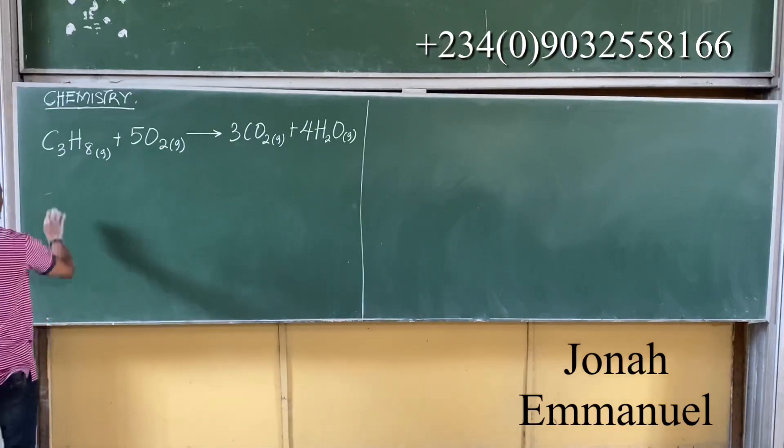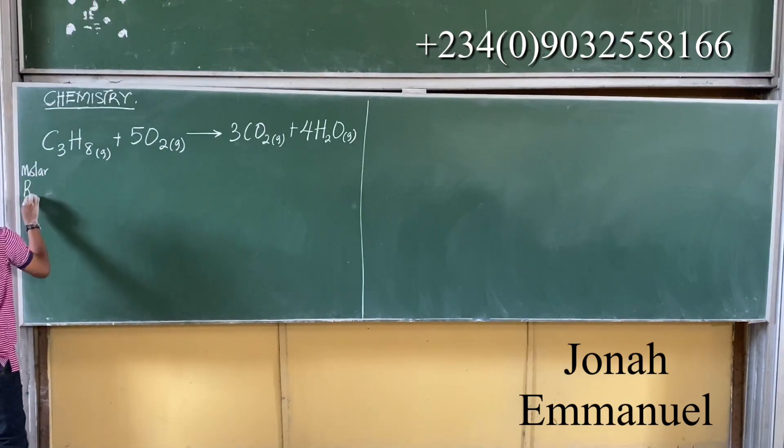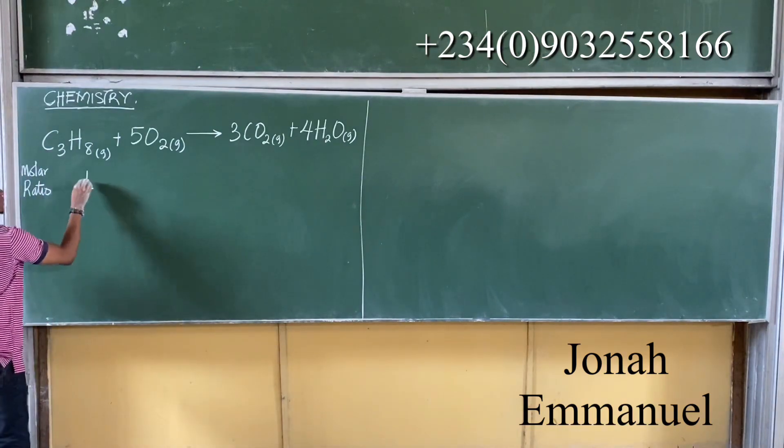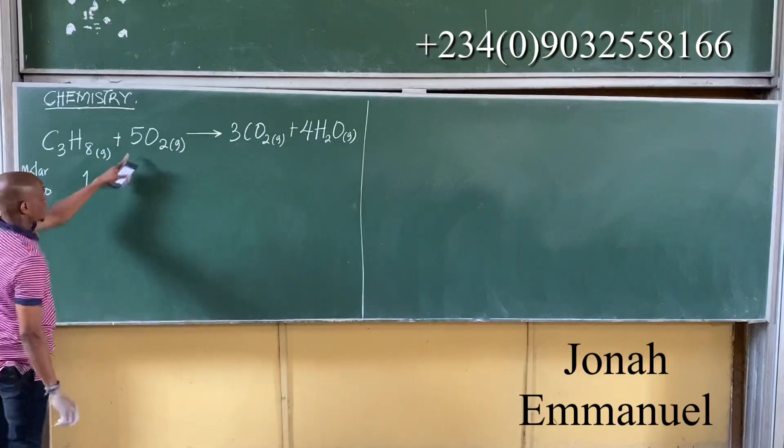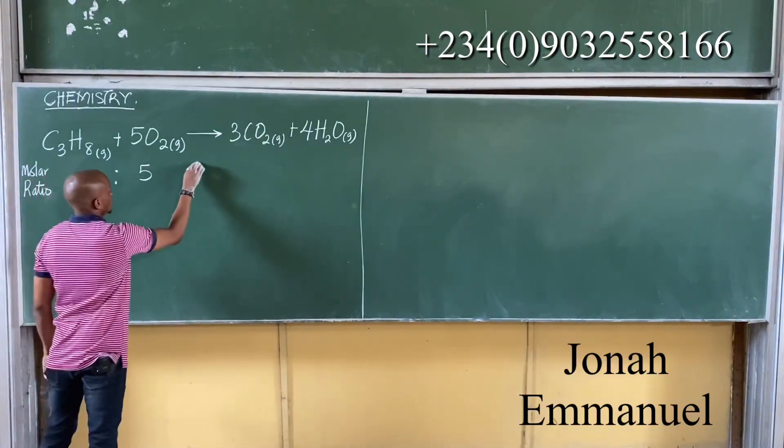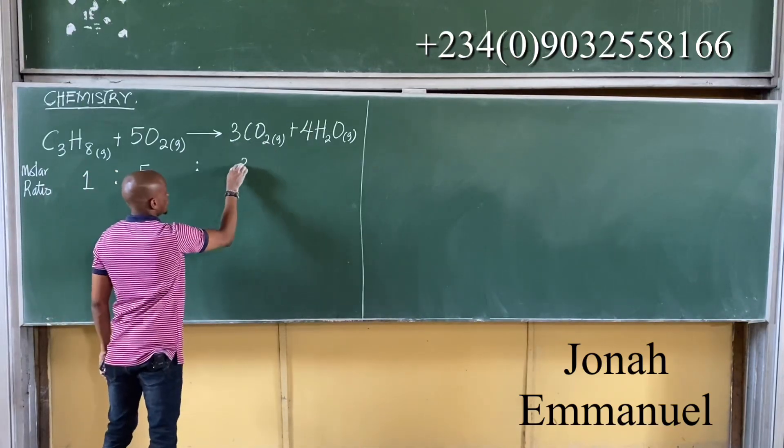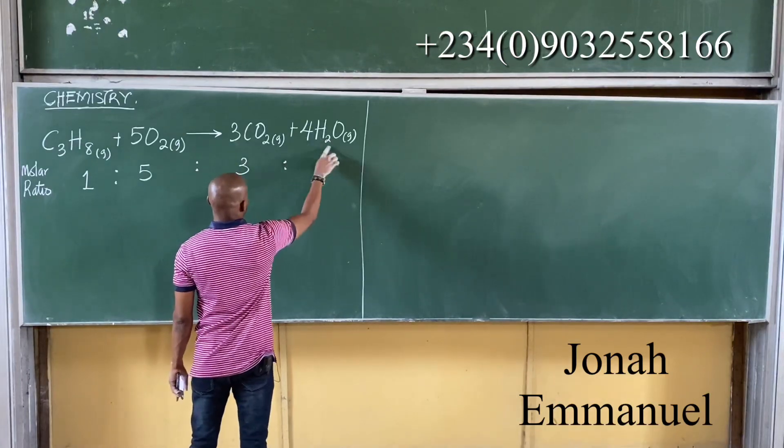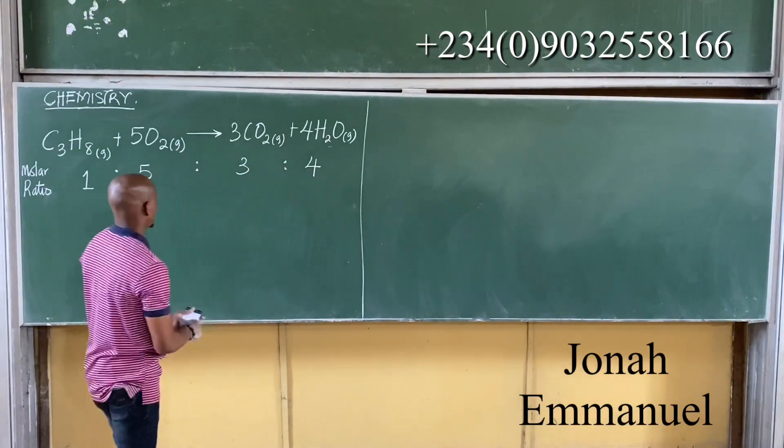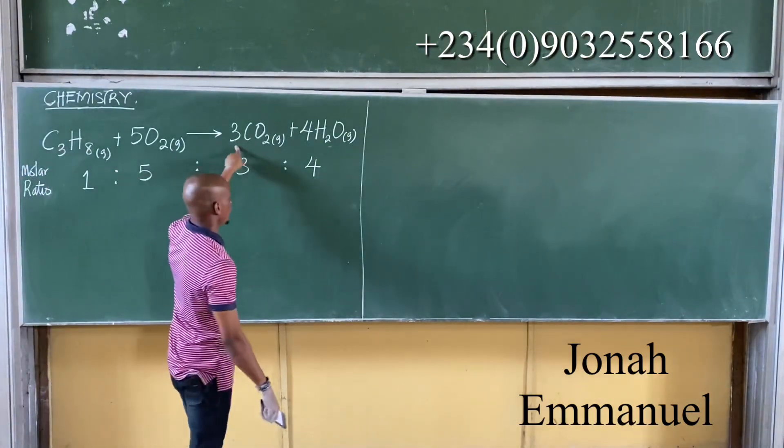My first task is to get out the molar ratio. Let's get molar ratio. For C3H8, the coefficient is 1. For O2, the coefficient is 5. For CO2, the coefficient is 3. And for H2O, the coefficient is 4. So the coefficients are 1, 5, 3, and 4.